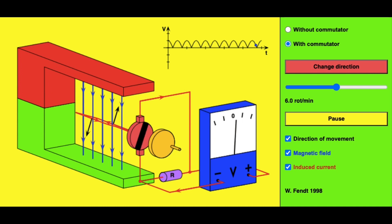The Walter Fentz simulation of a generator shows how electromagnetic induction is used to convert mechanical energy into electrical energy. We can see with this setup that there is some external force that is rotating.